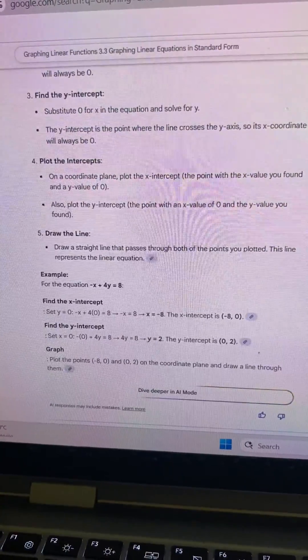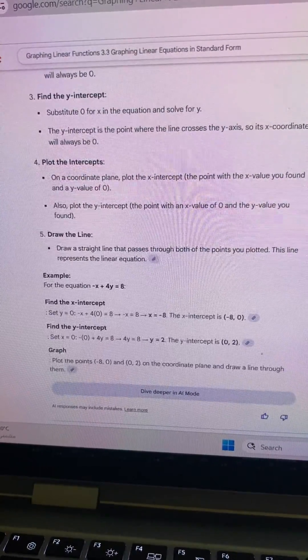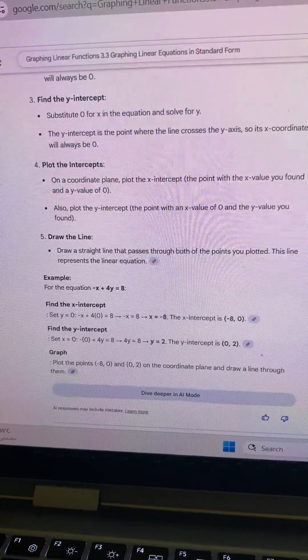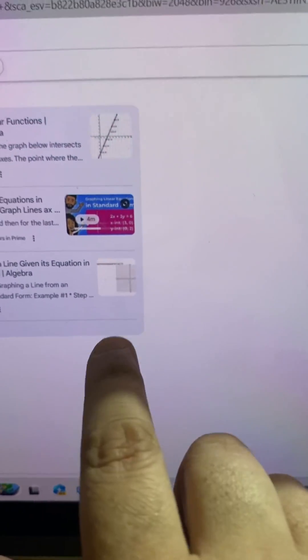Graph. Plot the intercepts: (-8, 0) and (0, 2) on the coordinate plane, and draw a line through them. Here, this is the coordinate plane, and we draw a line through them.